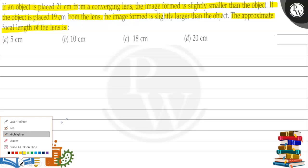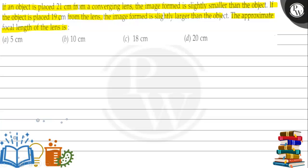Aayye bachon, is question ko solve kar letay hain. Is question mein humse yeh kaha gaya hai ki hamare paas ek object hai jise humne 21 centimeter ke distance par rakha converging lens se, aur jo image hai wo slightly smaller hai object se. Aur ek object humne 19 centimeter par rakha hai lens se aur jo image hai wo larger hai object se. Toh humein batana hai ki focal length kya hogi is lens ki.